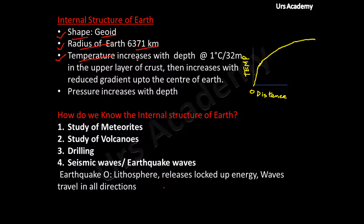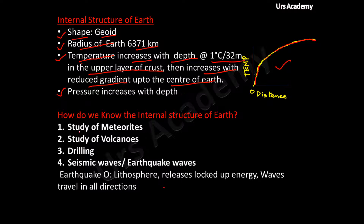Temperature increases with depth at the rate of 1 degree centigrade per 32 meters in the upper layer of the crust only, and then increases with a reduced gradient up to the center of Earth. In the graph, temperature varies at a uniform rate in the crust and then the rate keeps decreasing, becoming flattened near the core. Pressure also increases from the crust as we move deep inside the Earth toward the core.